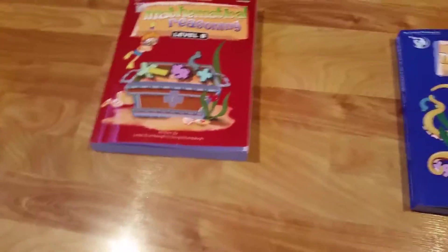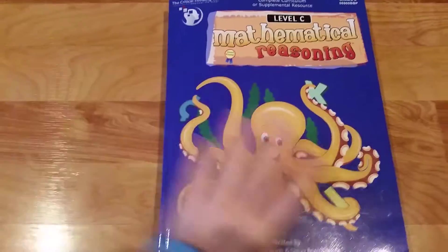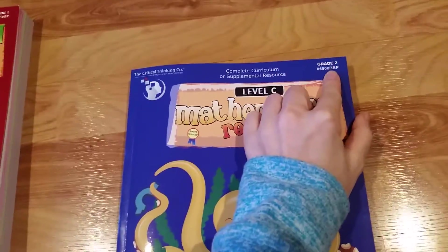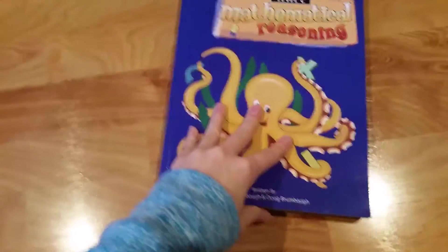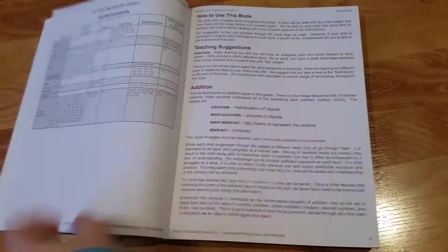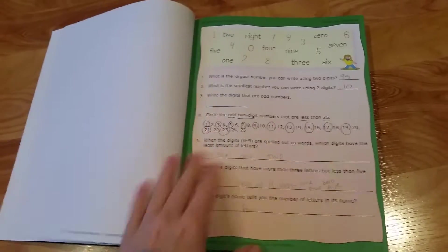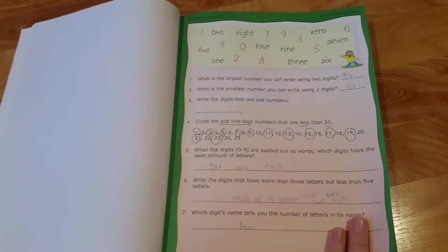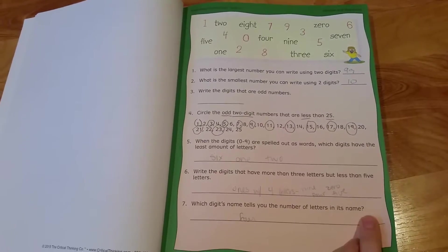That was Level B, and then this is Level C or grade two that my second grade son is using. Again, it has table of contents and a little bit for the teacher or parent, and then kind of jumps right in.